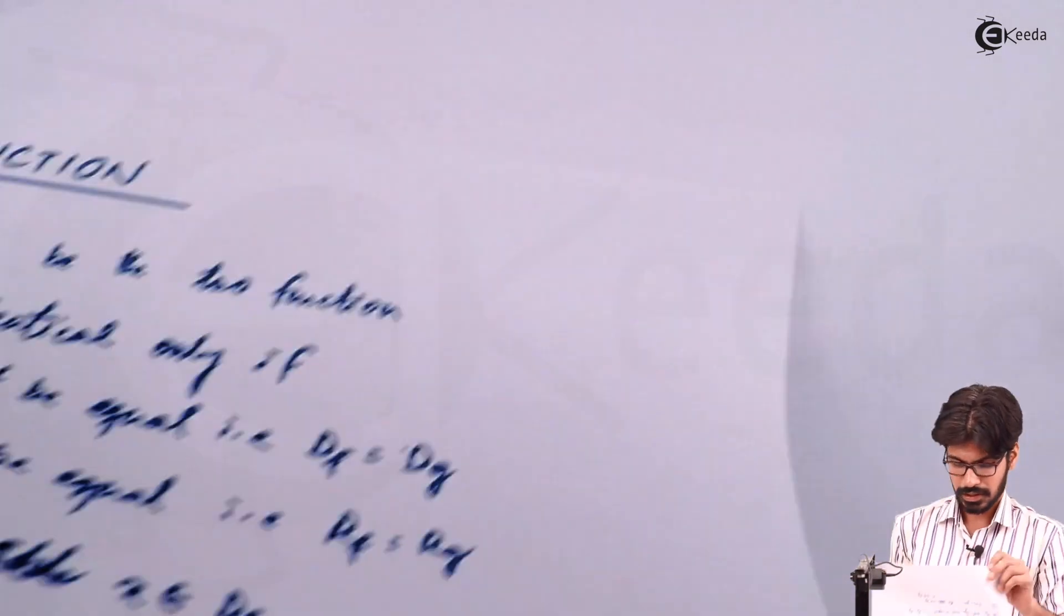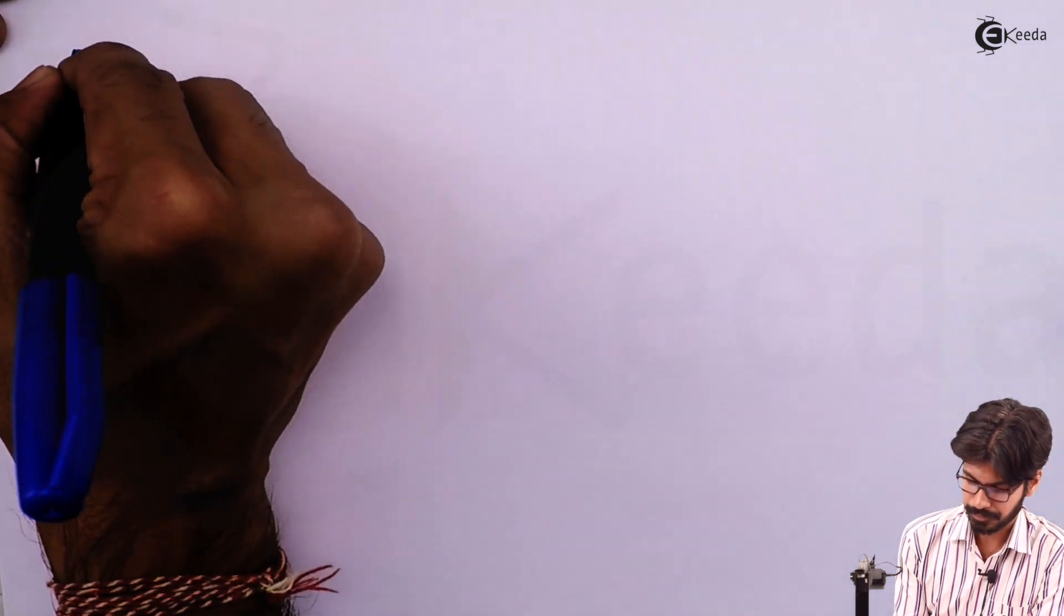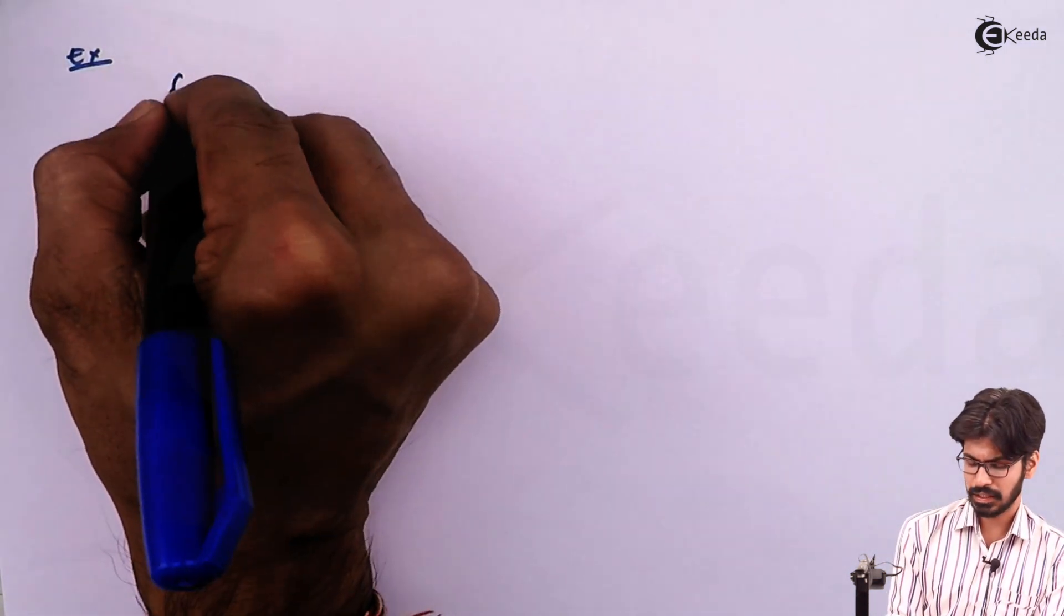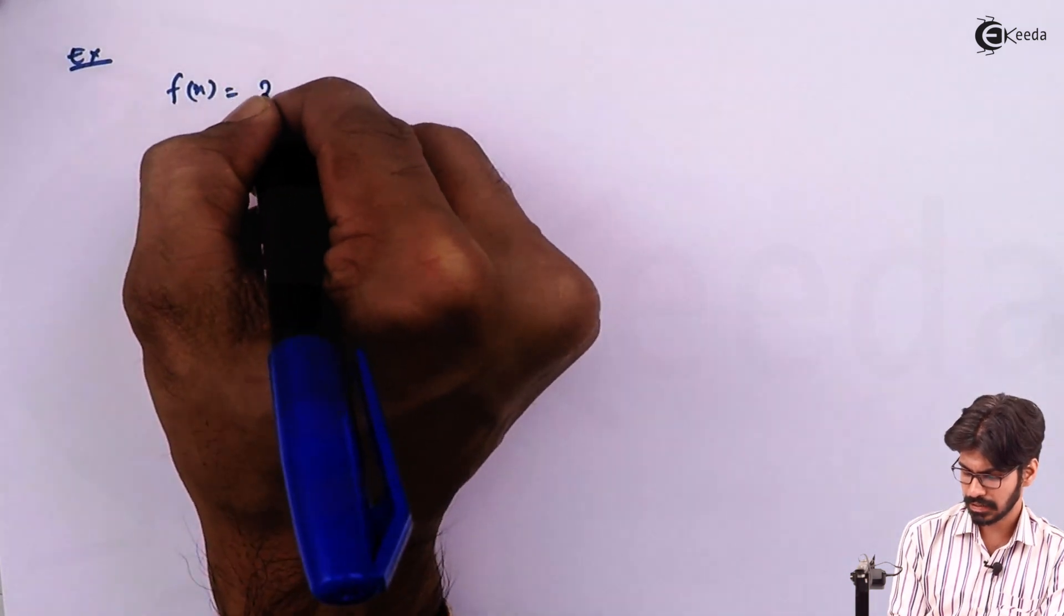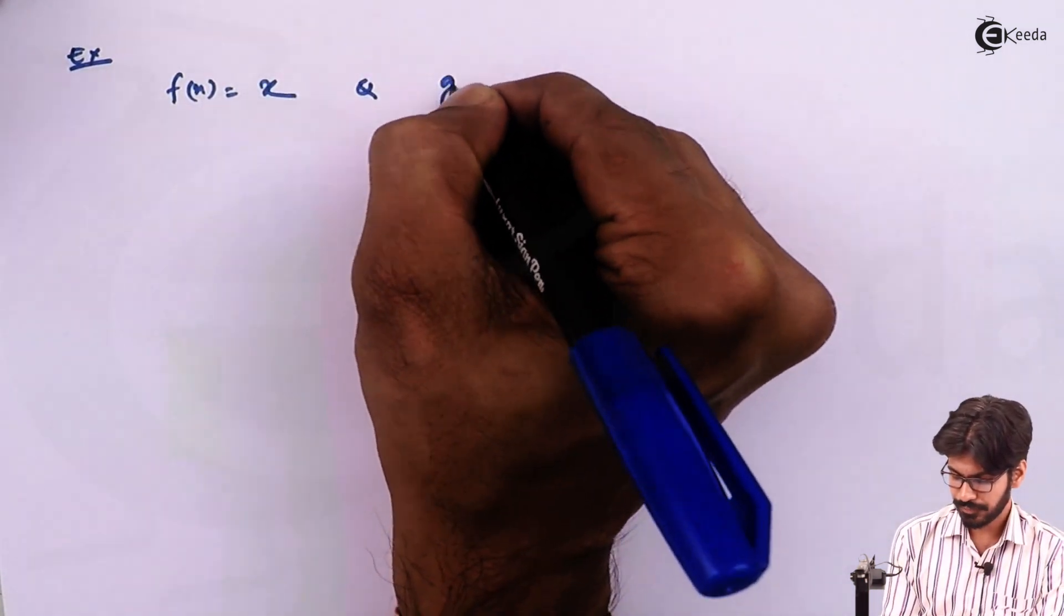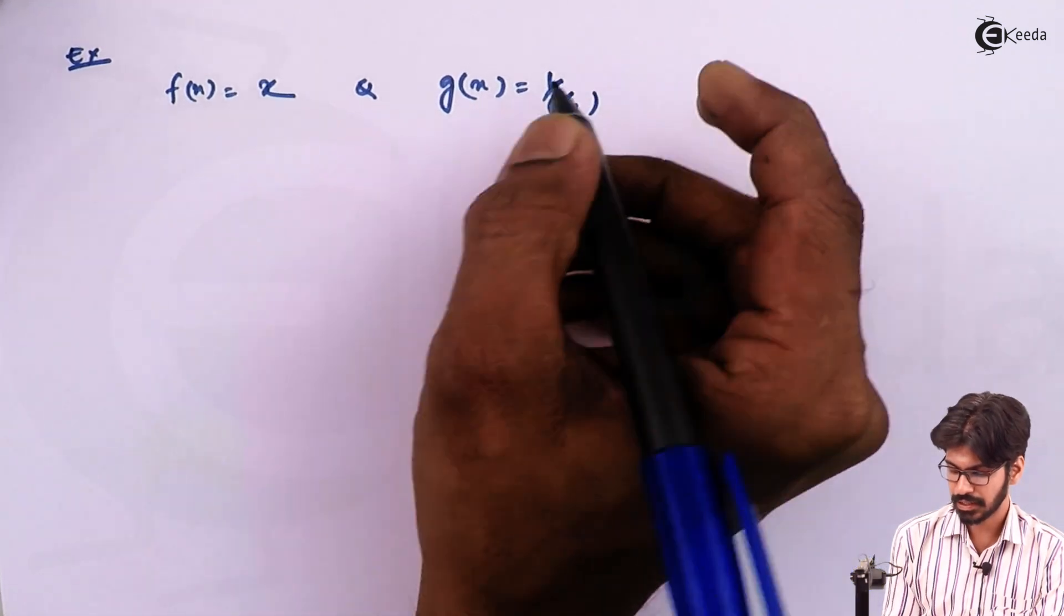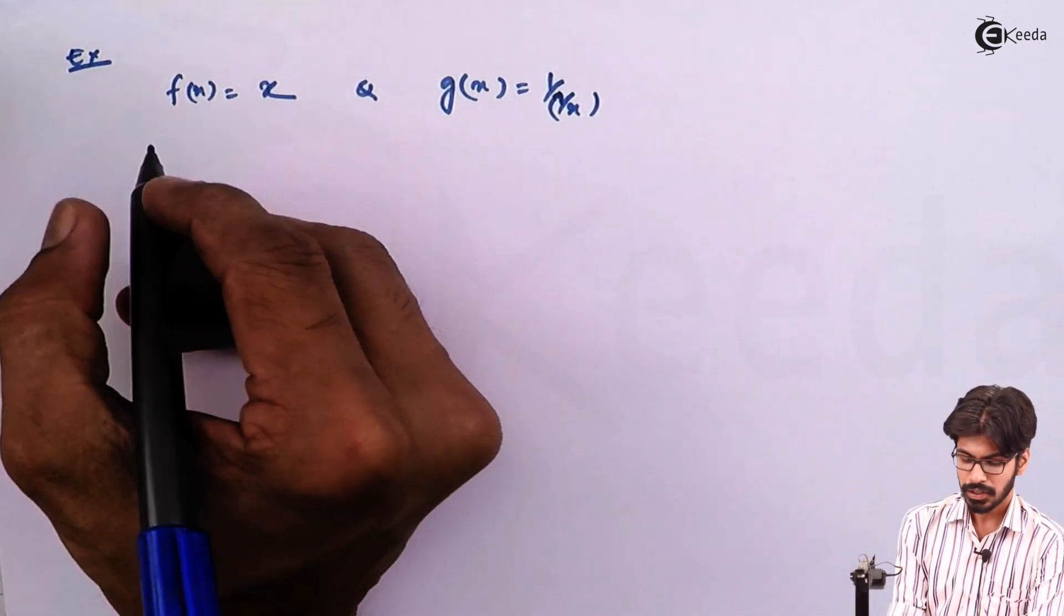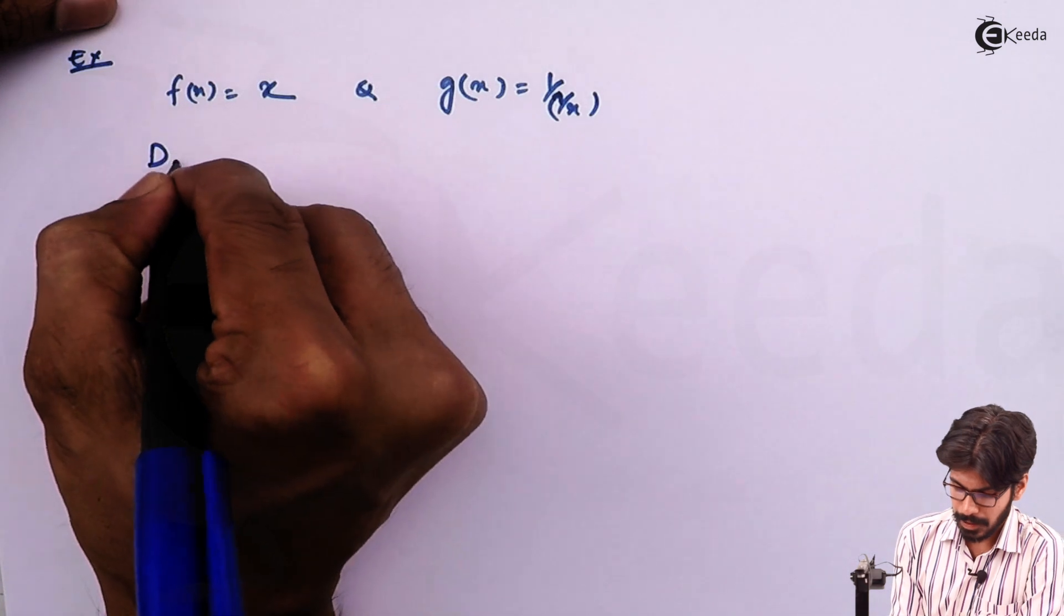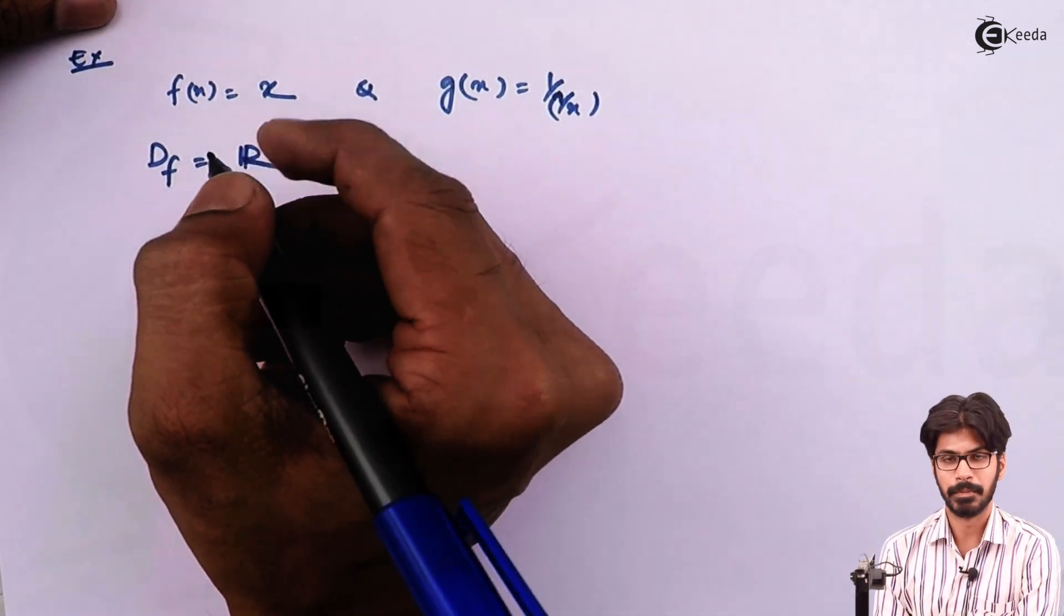Let us understand it more by taking some examples. Let us consider two functions f(x) be x and g(x) be 1/(1/x), that is also x. But the domain of f is whole real number.